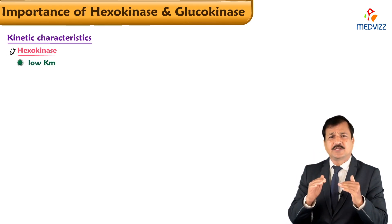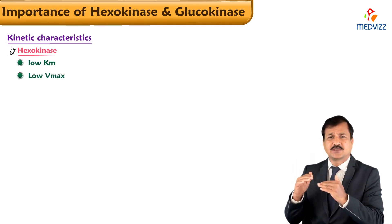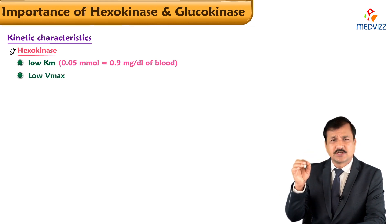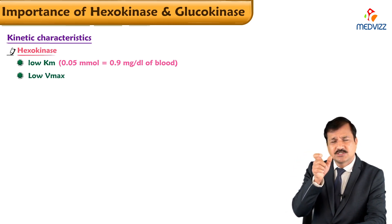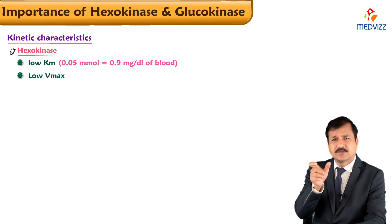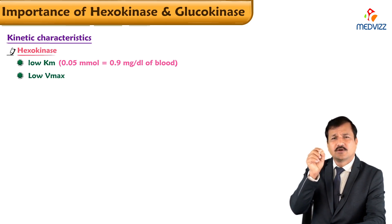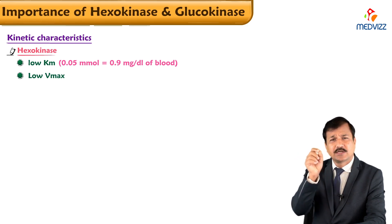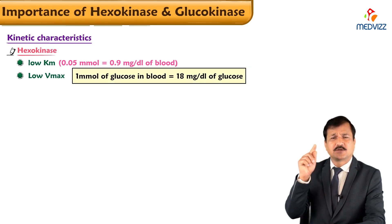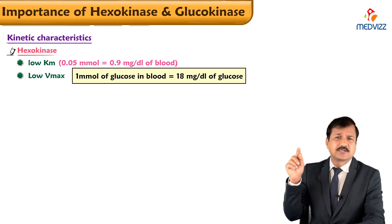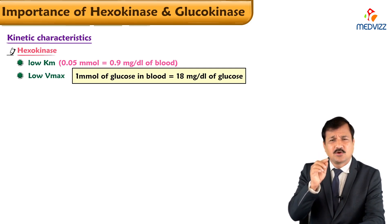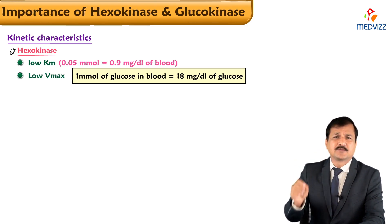Hexokinase is a low KM and low Vmax enzyme, as you see here. The KM of hexokinase is 0.05 millimoles. To understand this in milligrams of glucose per 100 ml of blood: since 1 millimole of glucose equals 18 mg/dL, a rough estimate is that 0.05 millimoles is equivalent to around 0.9 milligrams per deciliter — roughly 1 mg/dL.